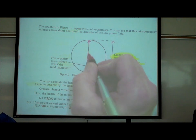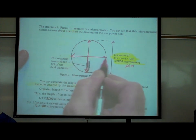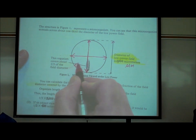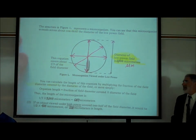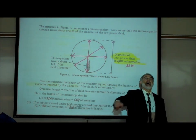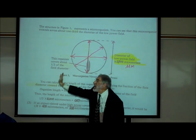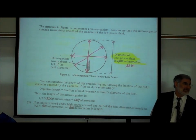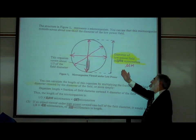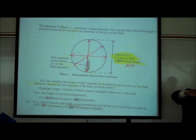The diameter is the distance from one side of the circle to the other — it doesn't matter which direction you draw it. Just like a 12-inch pizza means the diameter is 12 inches regardless of how you slice it, if the field of view is 2,000 µm in diameter, a diameter line is simply a line that divides the circle in half.